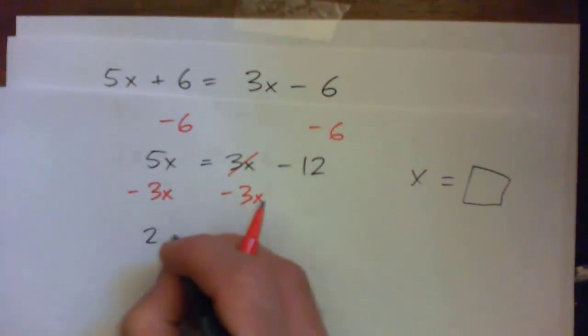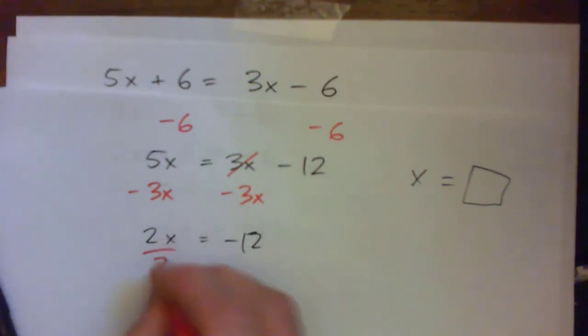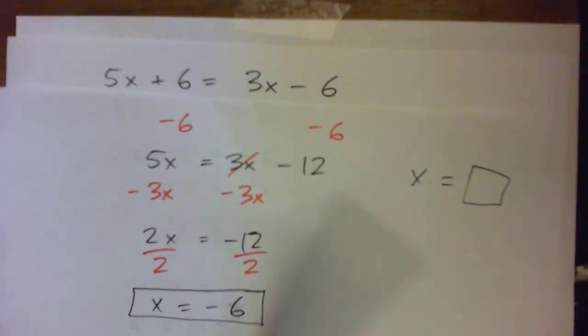And now we've got 2x equals negative 12 and divide by 2. And x is negative 6 once again. So there's lots of ways. There's actually four different ways of going about this. And you'll always get the same answer as long as you don't make a mistake.